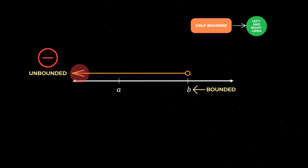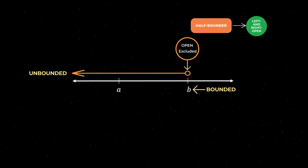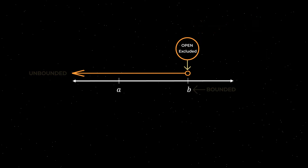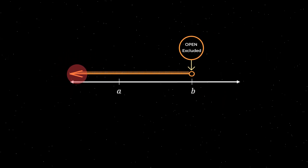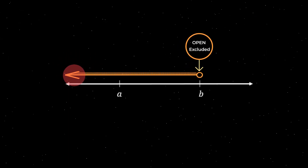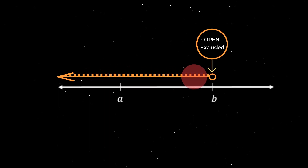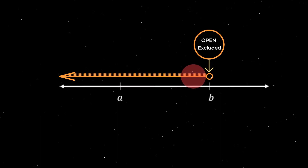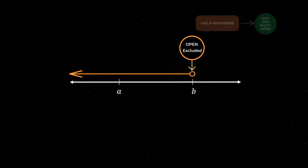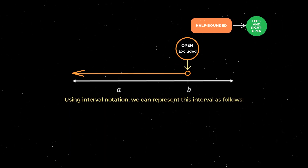Similarly, on the right, the interval is also open because the endpoint B is excluded, as indicated by the open circle. In other words, on the right, the interval is open because the real numbers go on forever, approaching but never actually reaching the number B. Using interval notation, we can represent this alternative half bounded left and right open interval as follows.